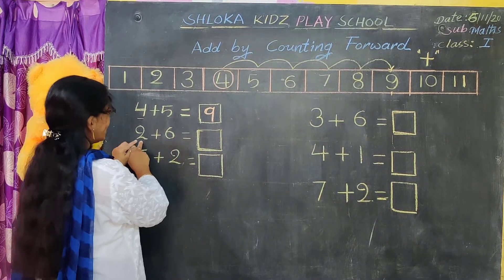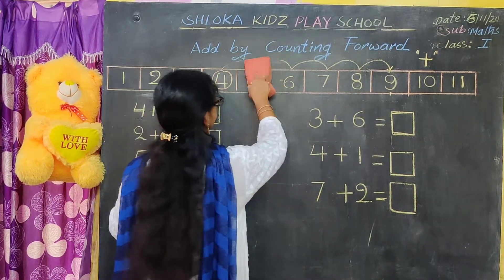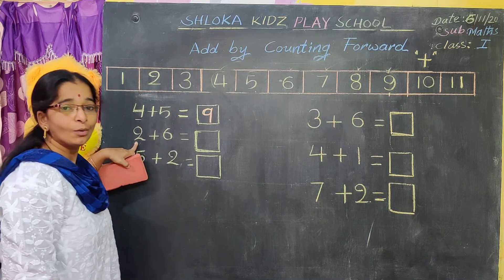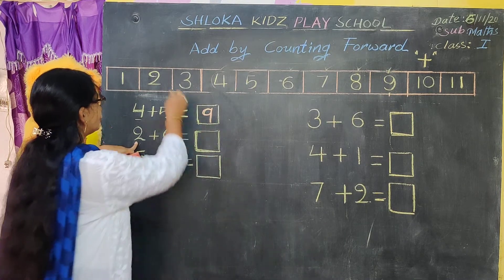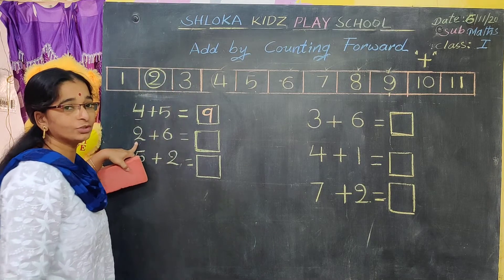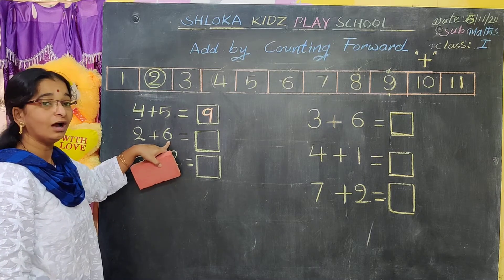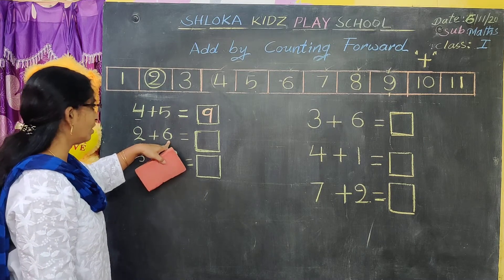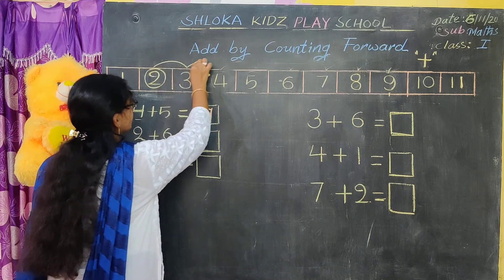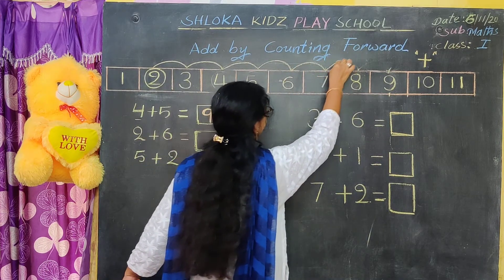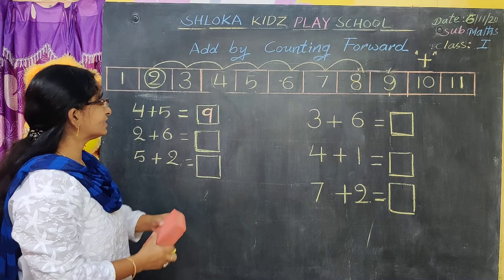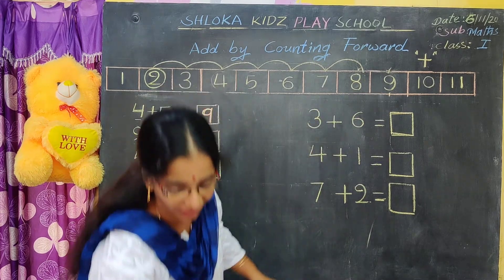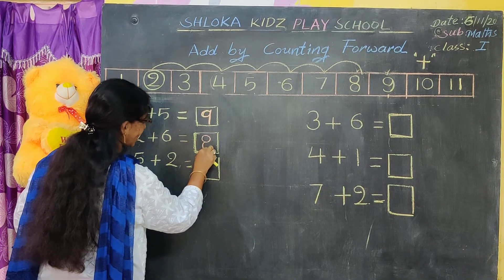Now second problem. What is the number here? Two. What is the number here? Two. So two we have to circle. Two number I am circling here. How much is here? We have to count forward by six. Six forward counting we have to do. One, two, three, four, five, six. We jumped from two by six. So we have to write down the answer eight.